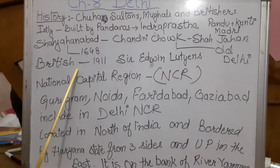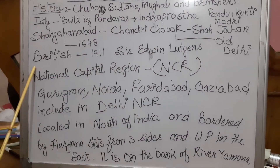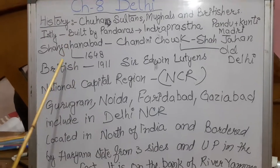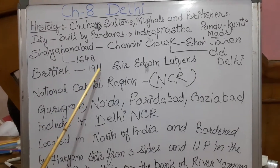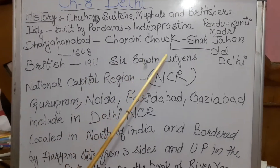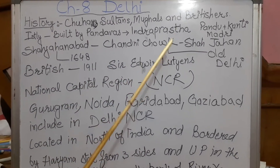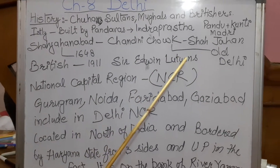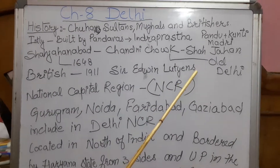After that, the Britishers came here and they overruled Delhi, and in 1911, Sir Edwin Lutyens designed many buildings in Delhi.